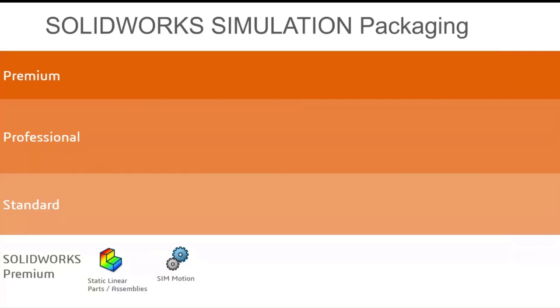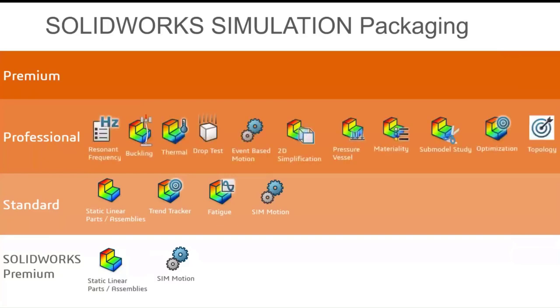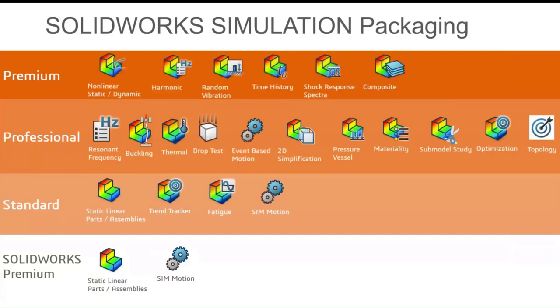Before we get into Structural Professional Engineer, I wanted to cover the SOLIDWORKS simulation packaging and what you may currently already have or be using. That starts with SOLIDWORKS Premium, which is the basis for our simulation package — that's the static linear and parsing of assemblies. From there, simulation Standard, Professional, and Premium all add levels of complexity into the solution, different modes of failure, and at the SOLIDWORKS Simulation Premium level you start getting into non-linear static and dynamic analysis.